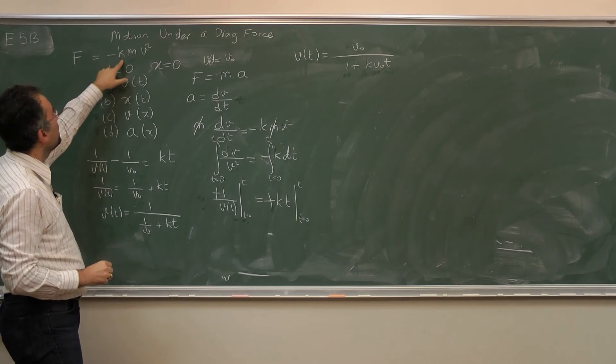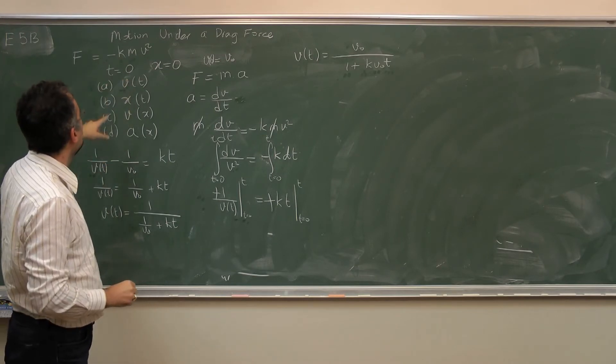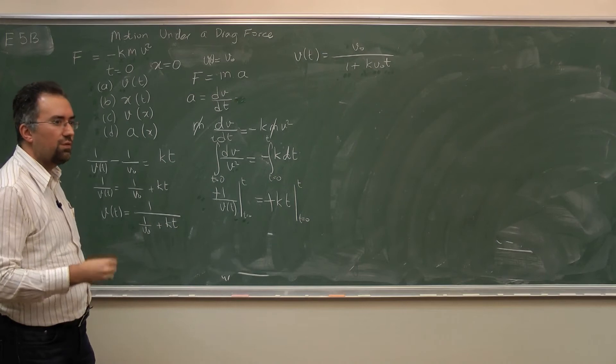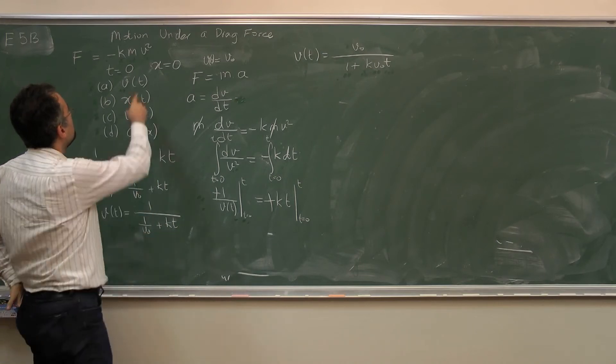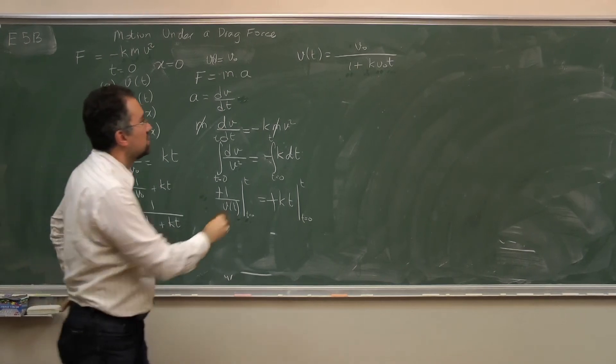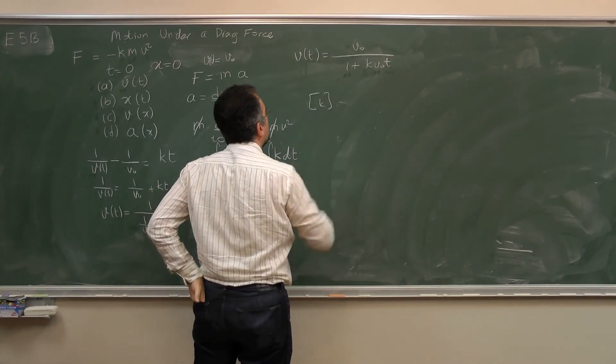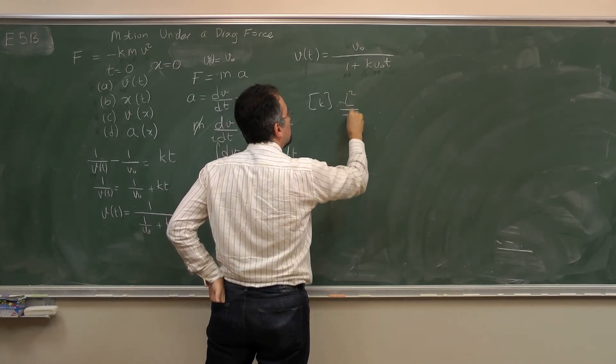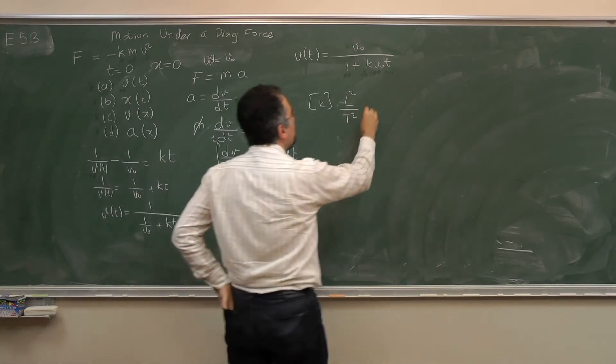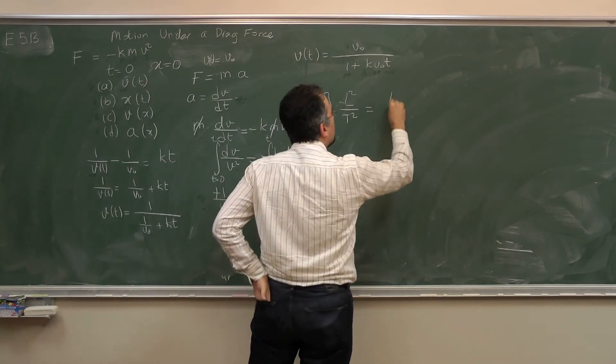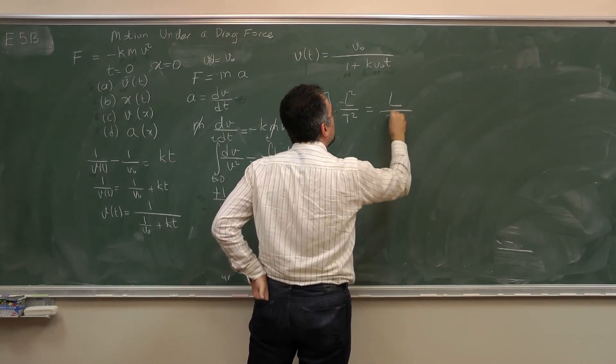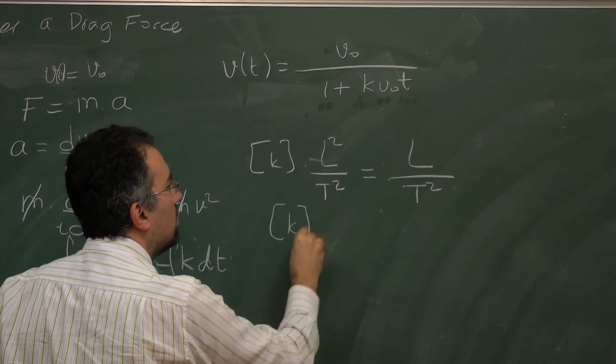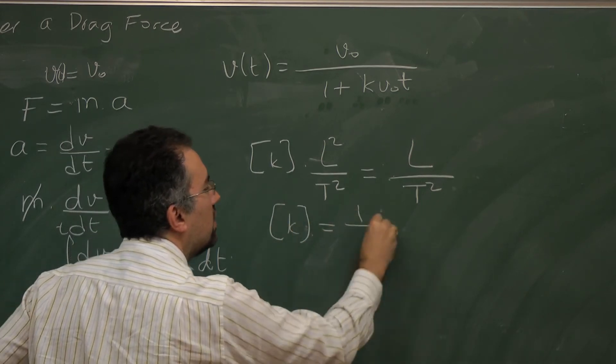So the force is just mass times acceleration. So k and v squared must be a force. If I forget the m, k times v squared must be an acceleration. So the units of k times speed squared is just length squared over time squared, must turn out to be an acceleration unit, which is length over time squared.